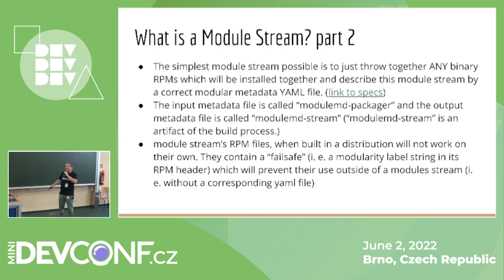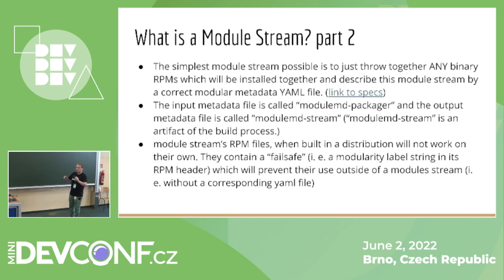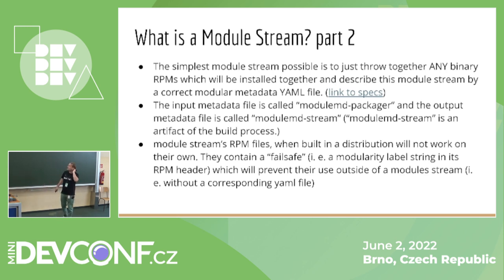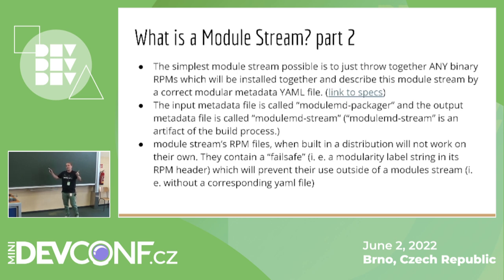There is so much about modularity that I won't be able to cover all of it, so I'm just giving you the highlights — what you need to know to start — and then you can look at our documentation, which was updated recently. The failsafe is just a string inside the RPM binary's header which says 'I'm from a module, I cannot be installed by myself.'